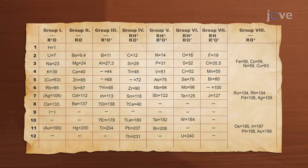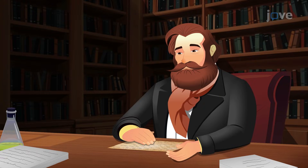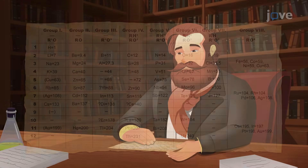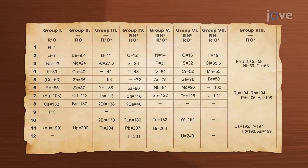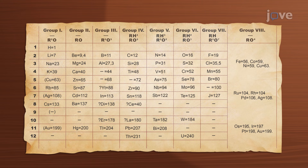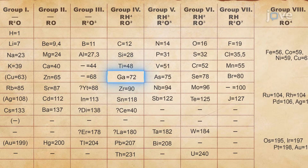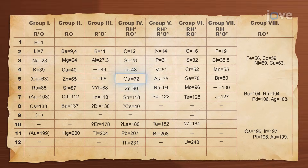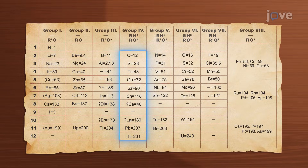What made Mendeleev's work extraordinary was his ability to predict missing elements. He left blank spaces in his table where undiscovered elements would fit, and later scientists found those elements whose properties matched his predictions perfectly.